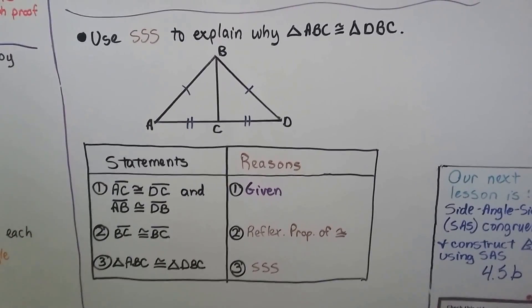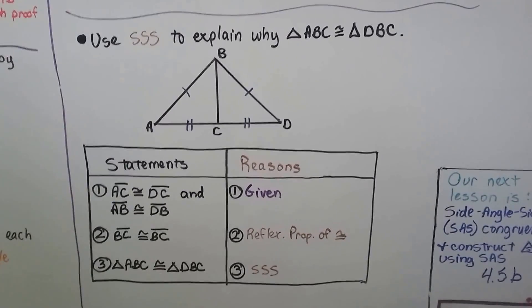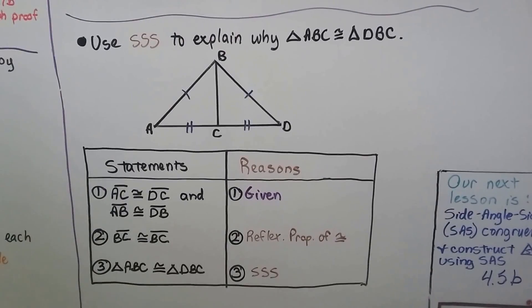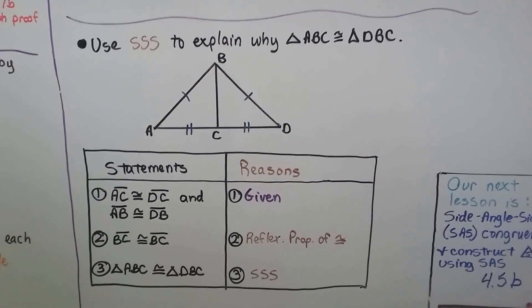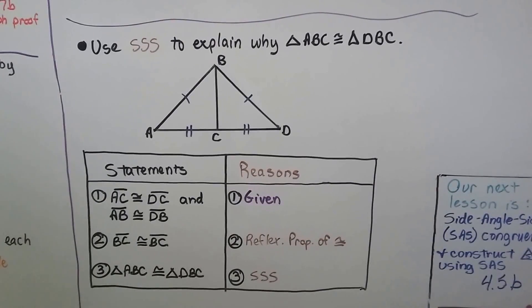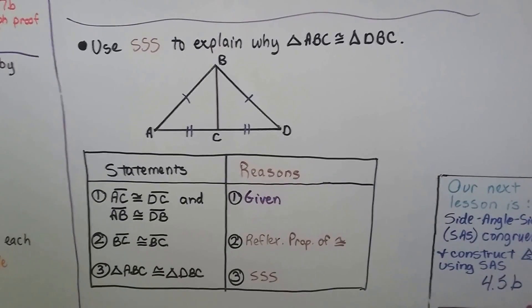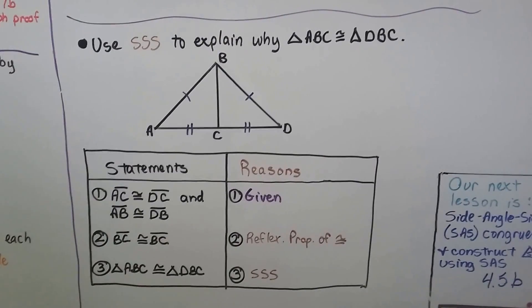That brings us to step 3: triangle ABC is congruent to triangle DBC because of side, side, side — SSS.